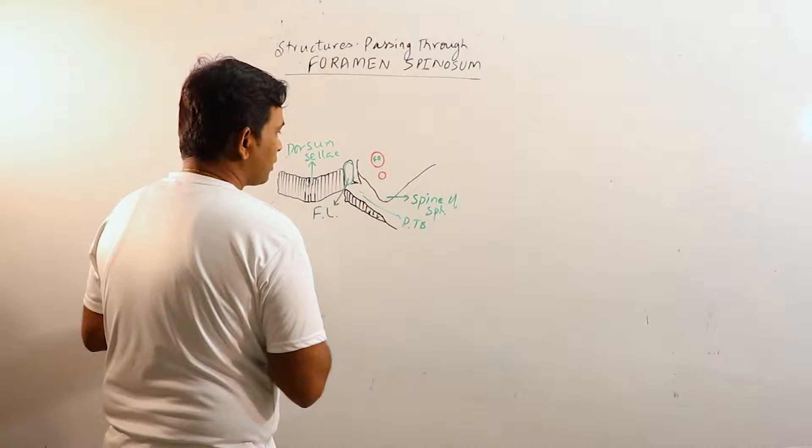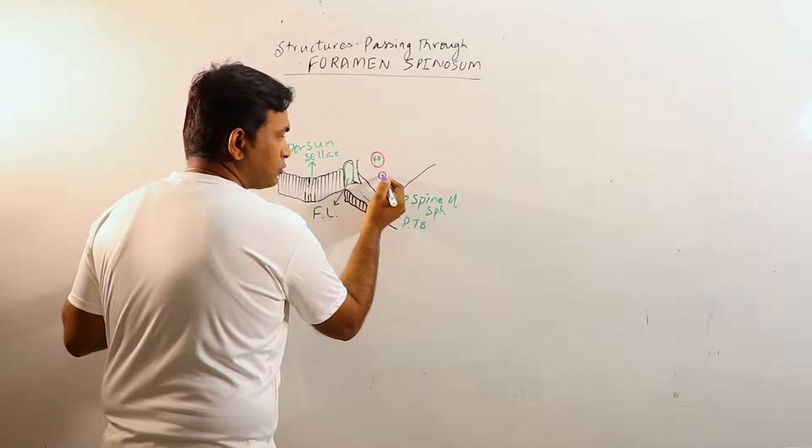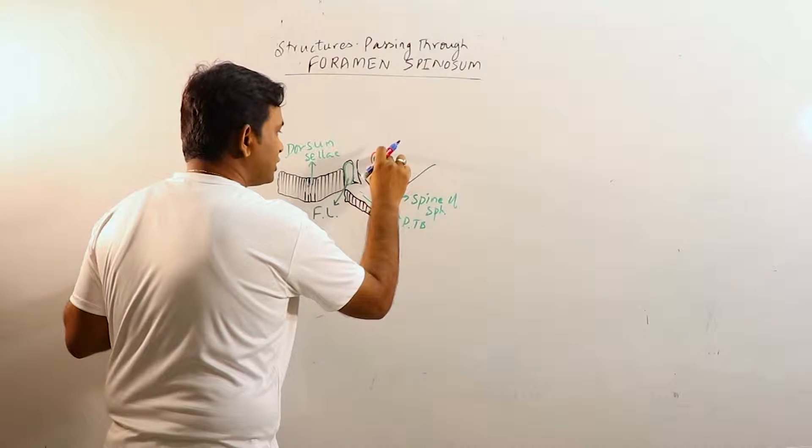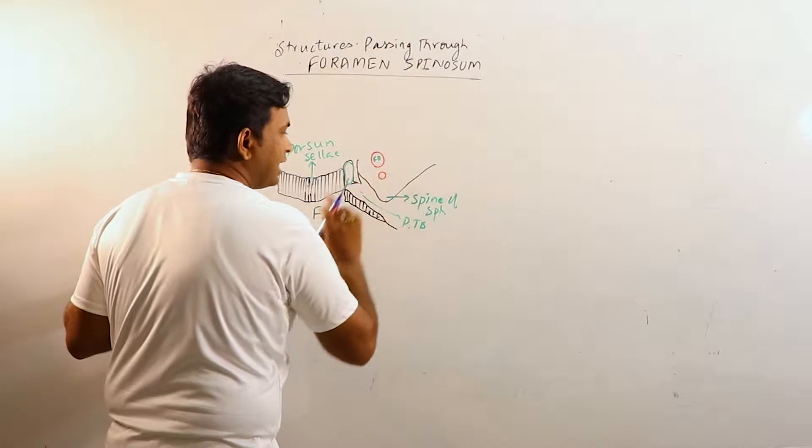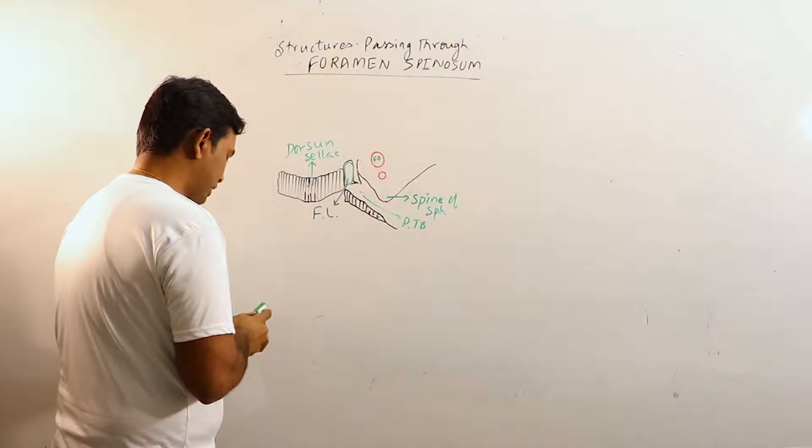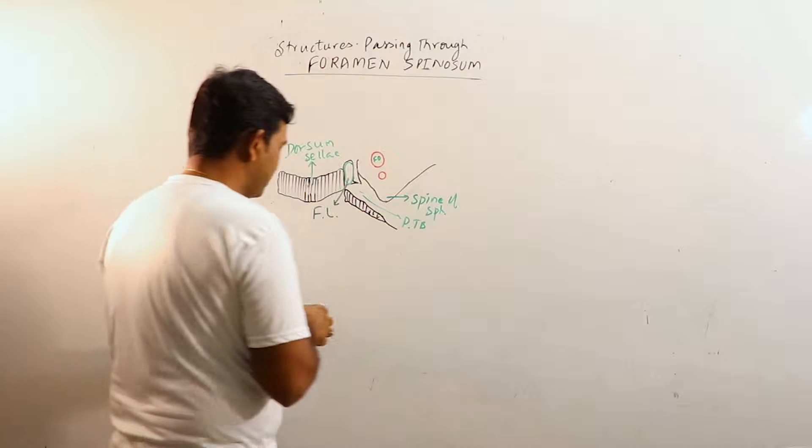So this foramen spinosum is located just posterior to the foramen ovale and anterior to the spine of sphenoid. Now what are the contents, various contents passing through it.